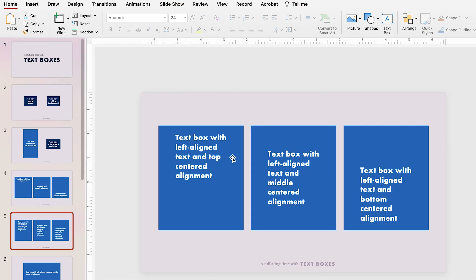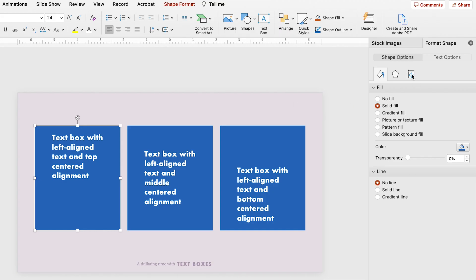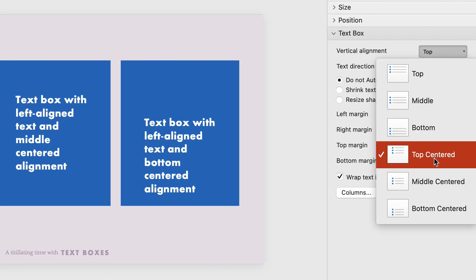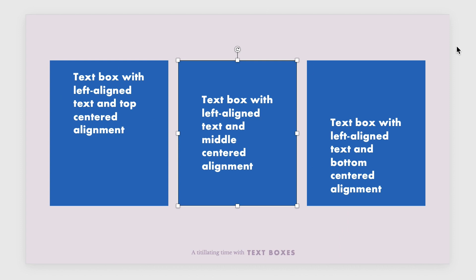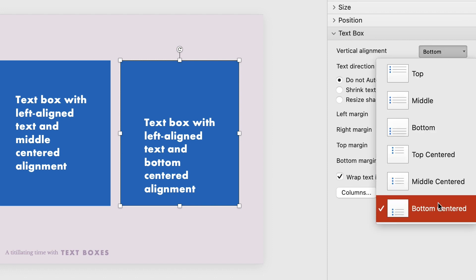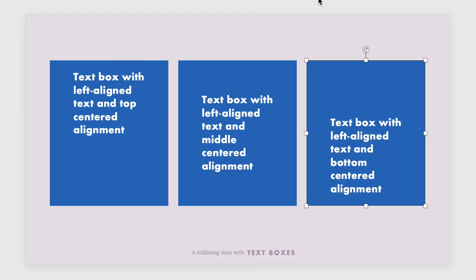On this slide there are additional options, but these can only be found in the Size and Properties panel, not the shortcut in the Home tab. So this one is top centered, this one is middle centered, and this one is bottom centered. These are especially useful if you have left- or right-aligned text but want it to appear in the middle of the text box rather than off to one side.